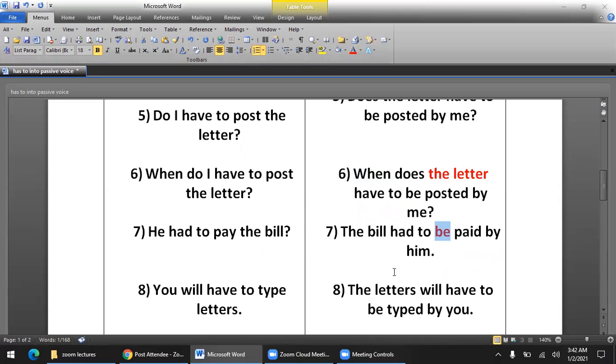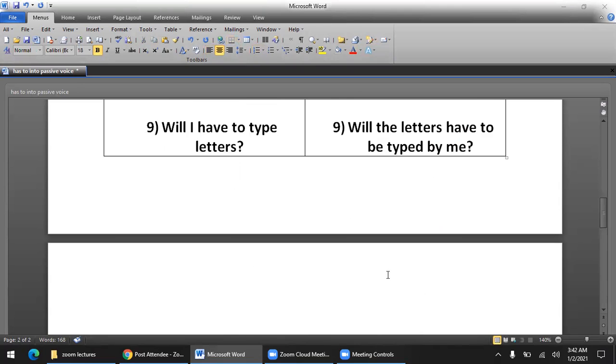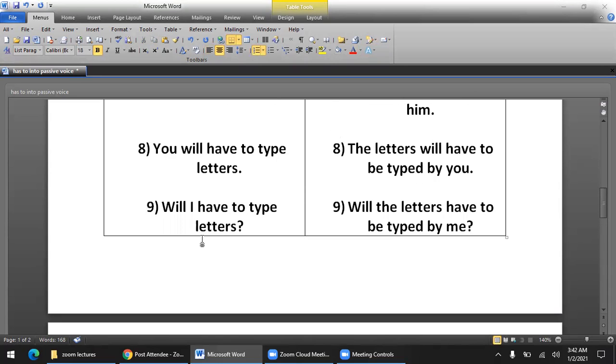Eighth sentence: 'You will have to type letters' becomes 'The letters will have to be typed by you.' Note that the subjective and objective case of 'you' is the same. Ninth sentence: 'Will I have to type letters?' becomes 'Will the letters have to be typed by me?' Notice the pronoun changes. Clear? If you have any confusion, you can ask or comment.